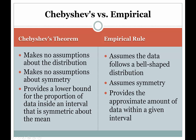When you're dealing with the empirical rule, we have a totally different situation. We do assume the data follows a specific distribution, and that distribution is bell-shaped. And because it's bell-shaped, we assume that it's perfectly symmetric, meaning that indeed half the data lies beneath the mean and half the data lies above the mean.